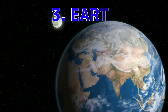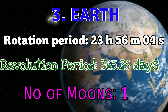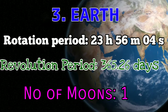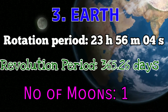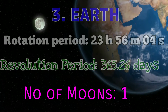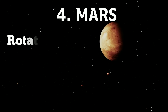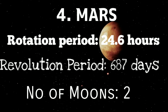Earth: Rotation Period 23 Hours 56 Minutes 4 Seconds, Revolution Period 365.26 Days, Number of Moons 1. Mars: Rotation Period 24.6 Hours, Revolution Period 687 Days, Number of Moons 2.